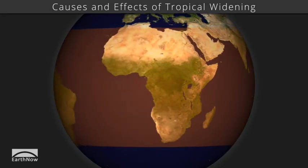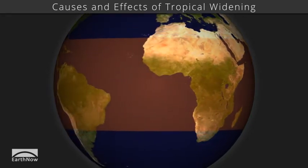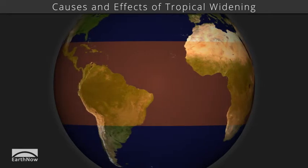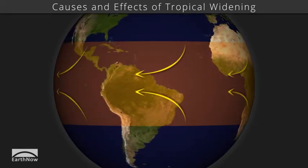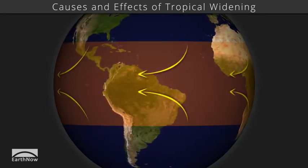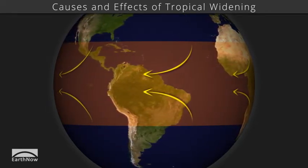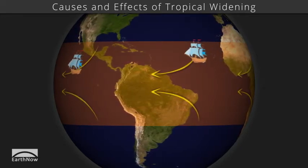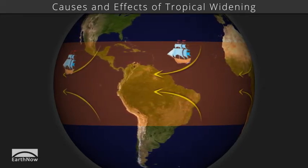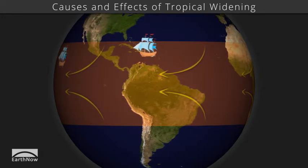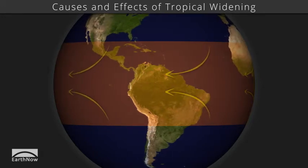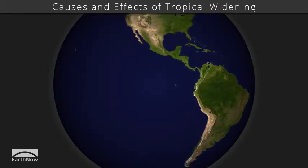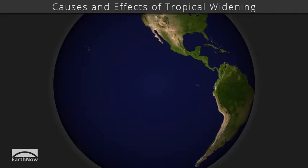What is the tropics, and how could its expansion cause drought in the subtropics? The tropics is an area around the equator where prevailing trade winds blow from east to west. Early explorers used these to cross the Atlantic and Pacific Oceans. Trade winds are caused by the sun heating the equator more than the north and south poles.